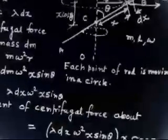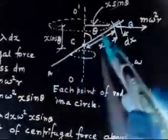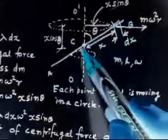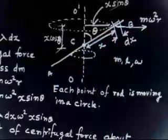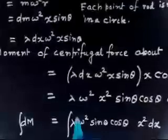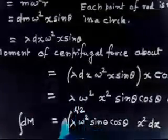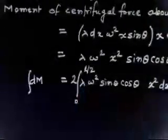The integration limits run from -L/2 to +L/2 along the rod. By symmetry, the moment from both halves is equal, so I can integrate from 0 to L/2 and multiply by 2. This is valid because the moment from one side equals the moment from the other side.